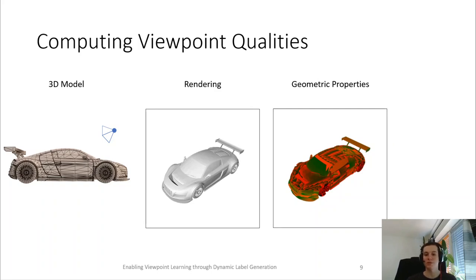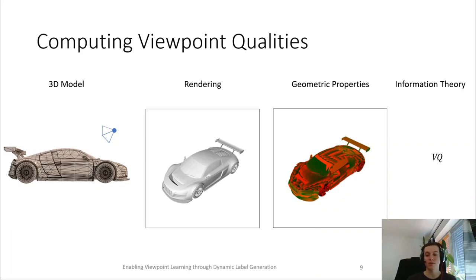The distribution of these geometric properties in the image can then be evaluated using an information theoretical function, for example the entropy or the mutual information, to compute a quality value for the given view. However, this quality value is not enough to identify whether or not the given view is good or bad, as it has to be set into relation with other views of the same model.